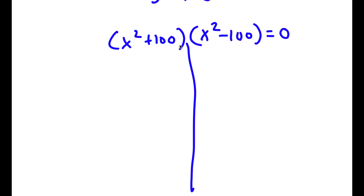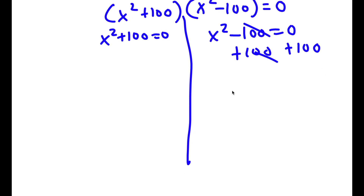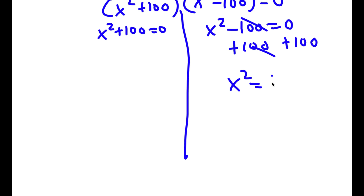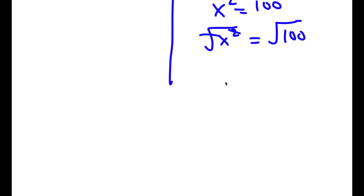So now this gives me two equations. I have x squared plus 100 is equal to 0, and I have x squared minus 100 is equal to 0. Let's first solve x squared minus 100 is equal to 0. I'm going to add 100 on both sides — these two cancel out — and I have x squared is equal to 100. Now taking the square root on both sides, I have x is equal to plus or minus 10.